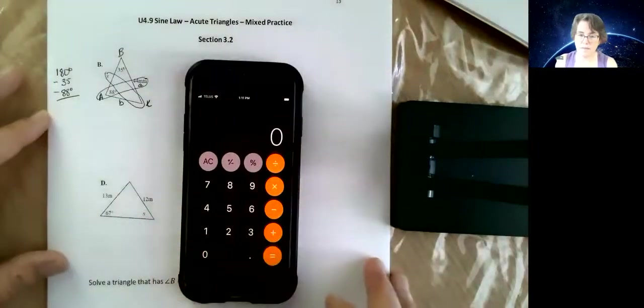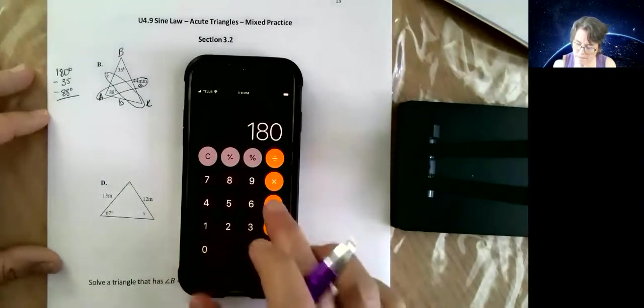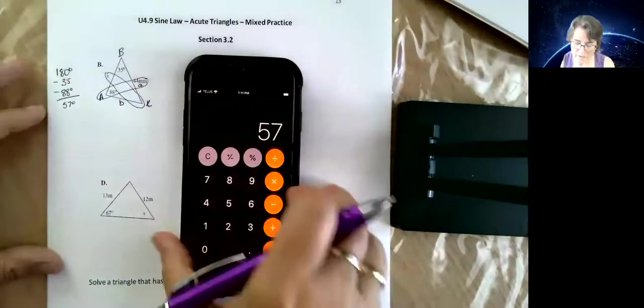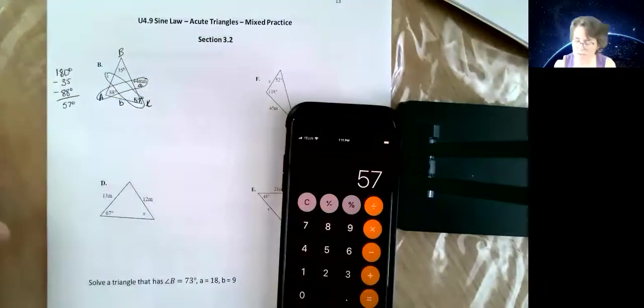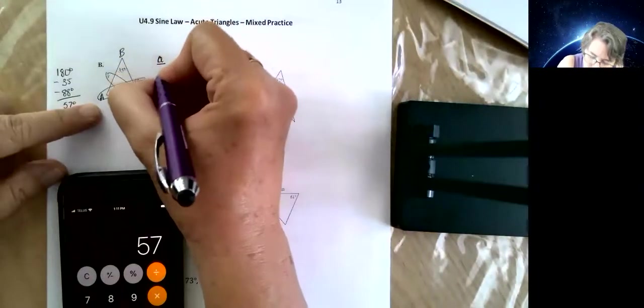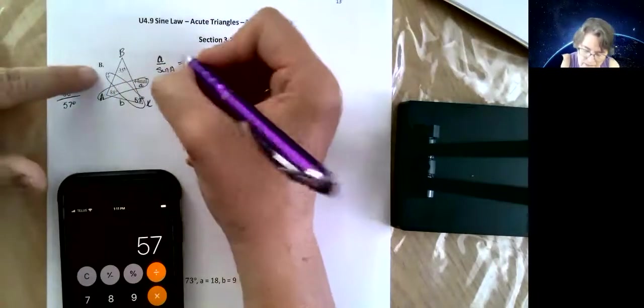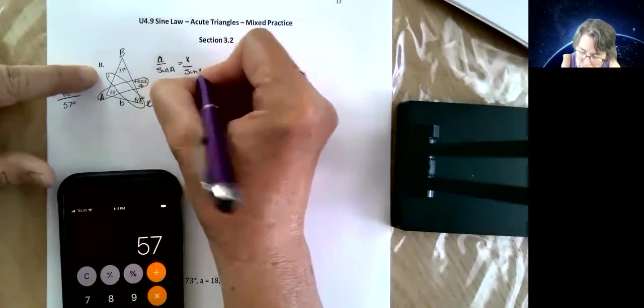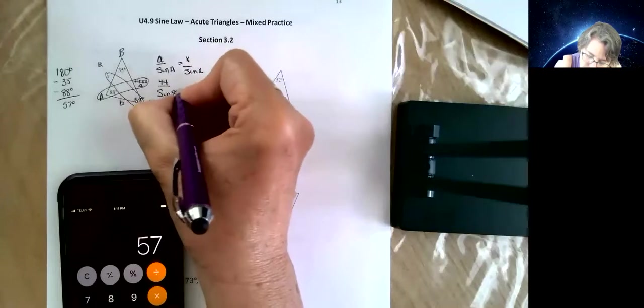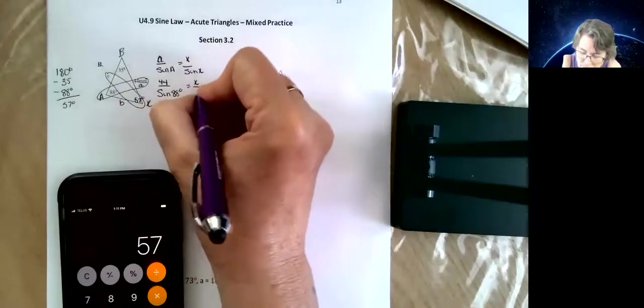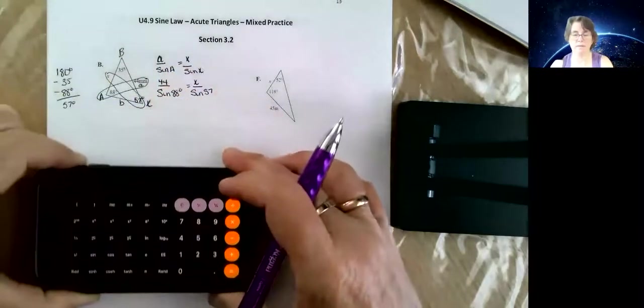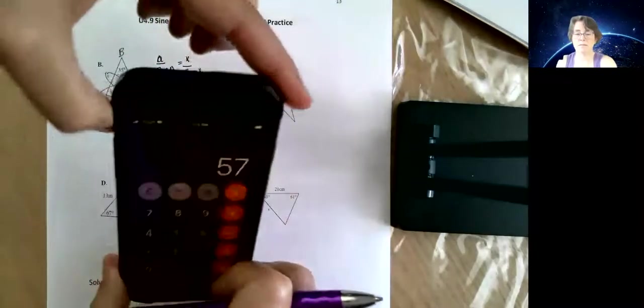I'm going to switch to my phone - not that I like my phone better, but I think it's easier to see. That's going to be 57 degrees, and I'm just going to put it on the picture right away. So the one that I know: a over sine a is equal to x over sine x. So little a I know, 44 over sine 88 is equal to little x, which is what the question asked me about, sine 57. I hope you know that by now.